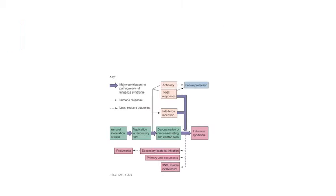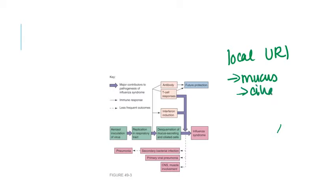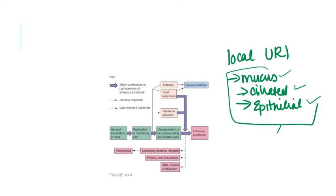As for pathogenesis, influenza typically establishes a local upper respiratory tract infection. It kills the mucus-secreting cells, ciliated cells, and other epithelial cells in the upper respiratory tract. Even though it's a budding virus, this still eventually leads to cell death. Removing mucus, cilia, and epithelial cells effectively shuts down three of the major innate immune barriers our body has.